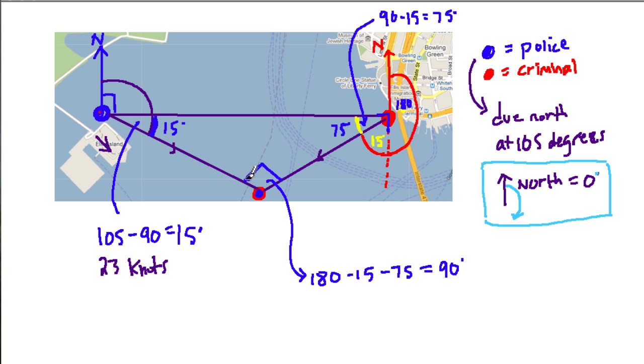What we want to know in this problem is, well, we can figure out all kinds of stuff. We can figure out how far did the police boat have to travel, and how far did the criminal boat have to travel. We can even look at how much time it took for them to get there, even though we had nothing about time. What do we know? The police boat is traveling at 23 knots to get to this point where they collide. And we know the angles of the boats are traveling, so we figured out these angles in the triangle.